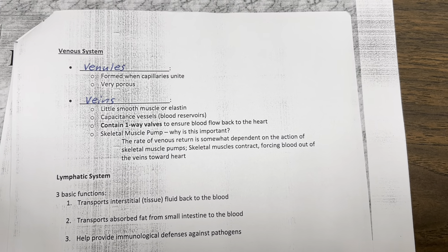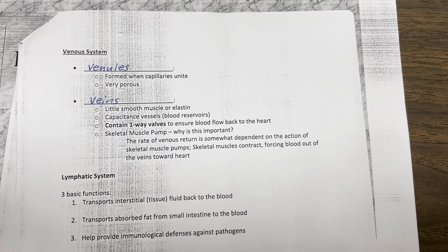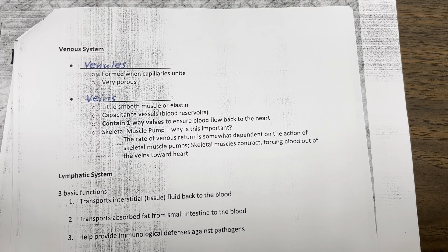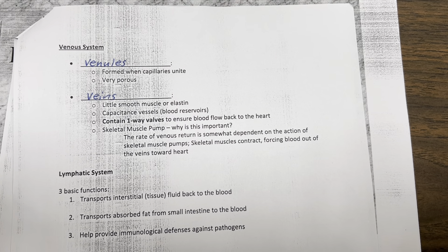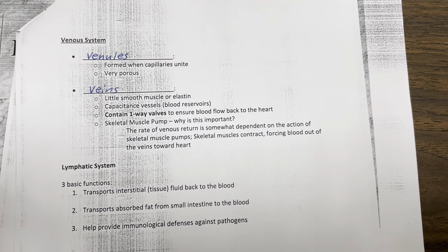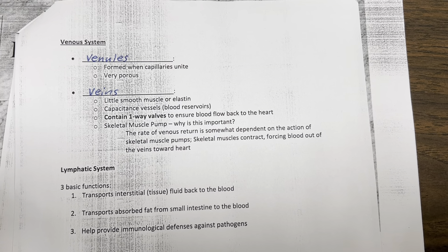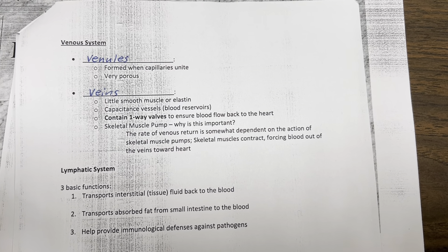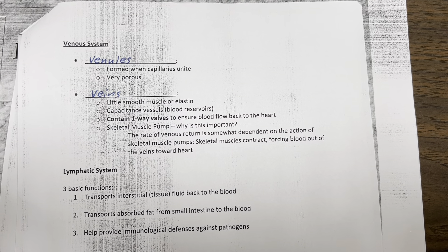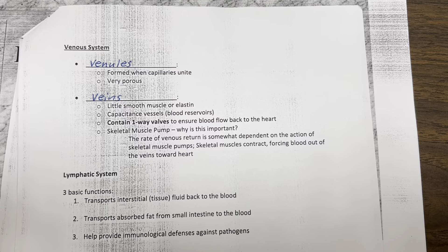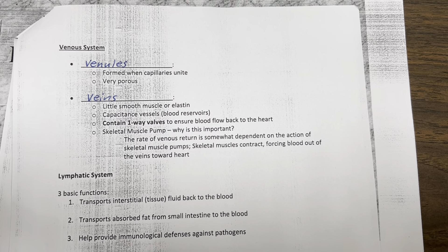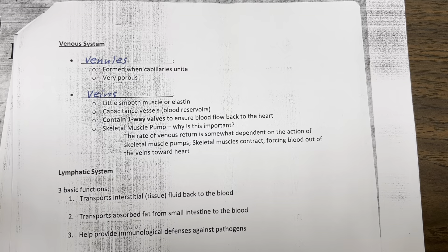Venous system: venules and veins. Venules are formed when capillaries unite, and are very porous.